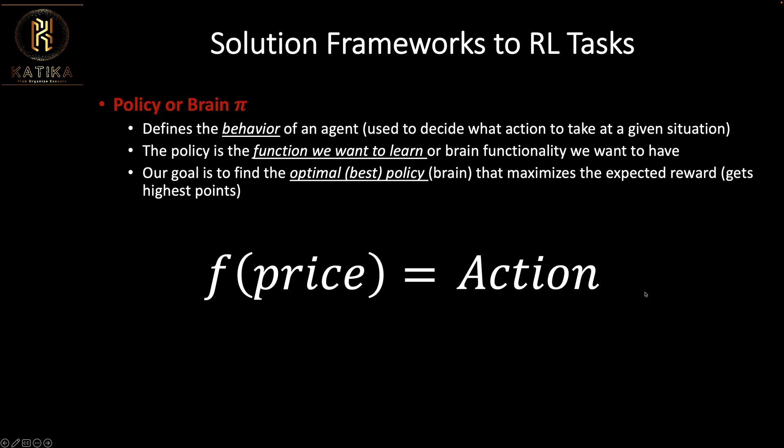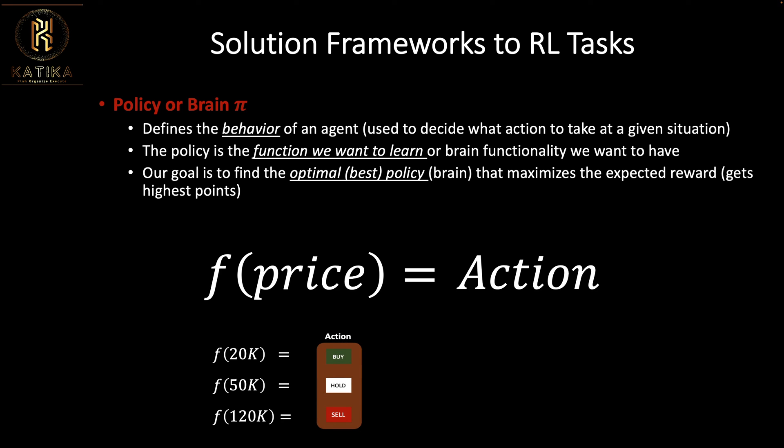We are learning a value function or a policy. For example, if Bitcoin is at $20,000, what should you do? The function of $20k could equal buy, sell, or hold. Similarly for $50k or $120k — we don't know yet. The policy is going to learn to make decisions based on price. So a policy defines: when it's at $20k, what action should I take? This is the brain of the agent learning to make decisions.